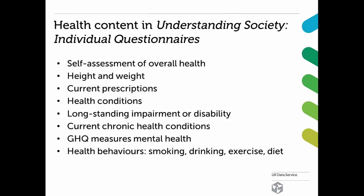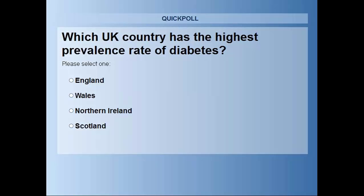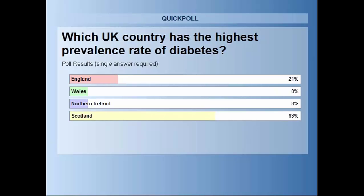The data allows us to look at the prevalence rate of different conditions. For example: which UK country has the highest prevalence rate of diabetes? Most of you voted Scotland, but when it comes to diabetes, Wales actually has a slightly higher prevalence rate — though Scotland does have the highest prevalence rate of high blood pressure. This shows the sort of information we can get from Understanding Society.